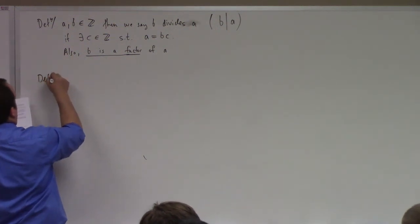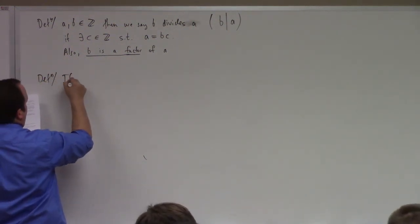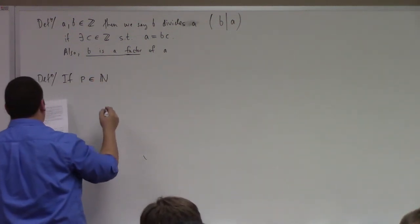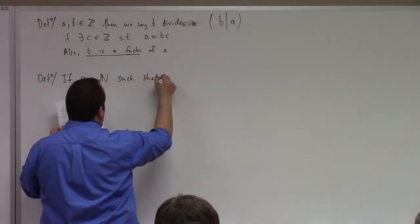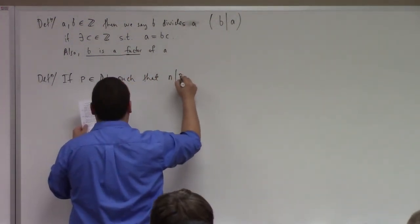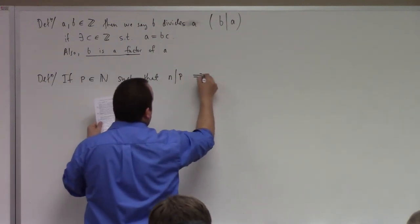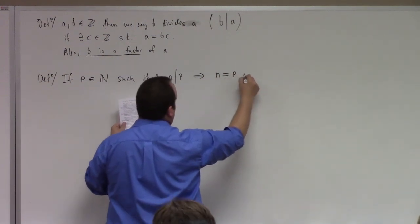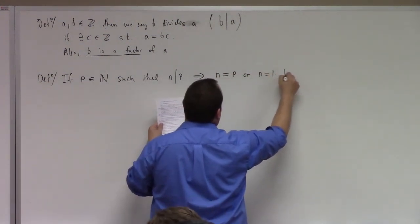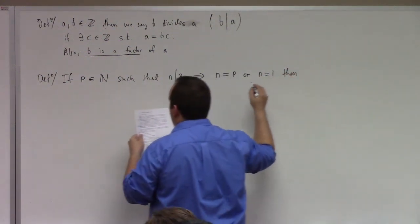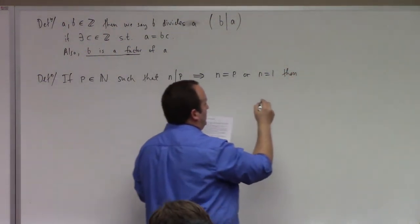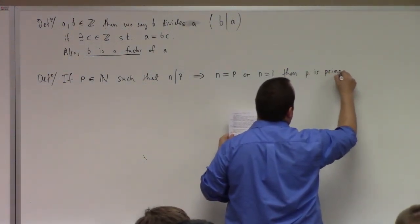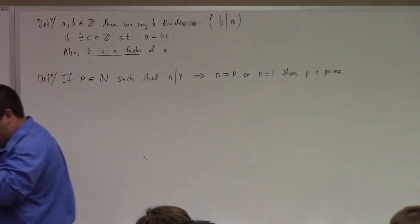Definition: if p is an element of the natural numbers such that n divides p implies n equals p or n equals 1, then p is — indeed — prime. I was going to have you fill in the blank, but you filled it in already. So yes, that's what we mean by a prime.